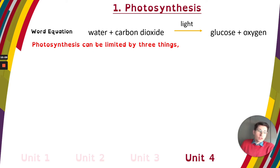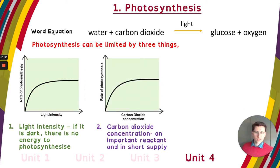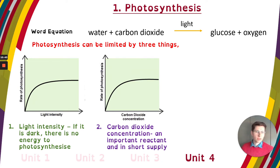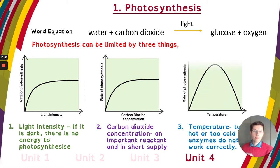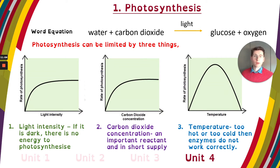Photosynthesis can be limited by three things. First, it can be limited by light — the darker it is, the less photosynthesis happens; the higher the light intensity, the more photosynthesis you get because light energy is the driving force. Second, carbon dioxide concentration — the more CO₂ we have, the more we'll react to form glucose and oxygen, so more carbon dioxide means a higher rate of photosynthesis. Third, temperature affects the enzymes that work in photosynthesis — if it's too cold or too hot, that will also limit the rate.